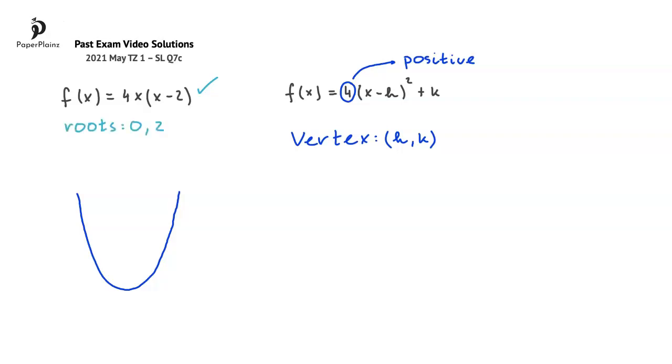Of course, these roots show us that the parabola has x-intercepts at 0 and 2, so we can add these intercepts to our graph.